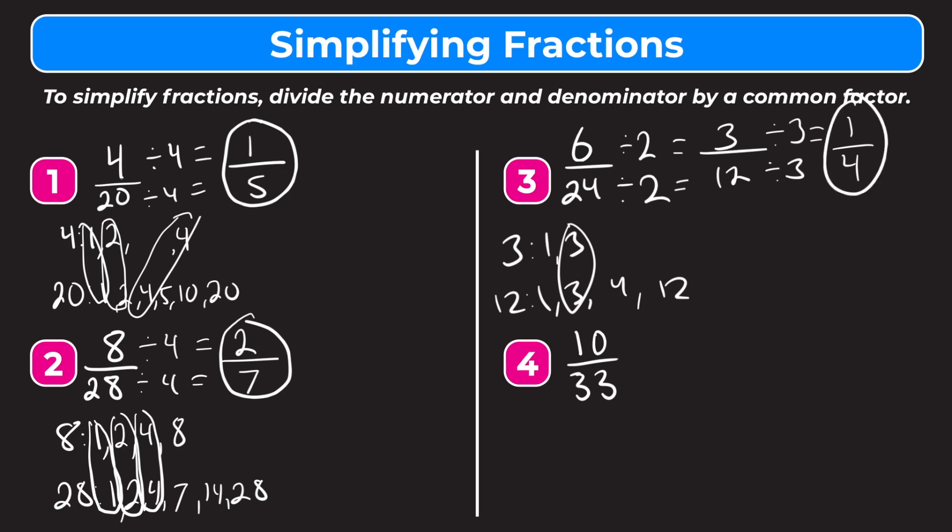We could have started by dividing by 3, then divided by 2; or we could have started by dividing by 6 and gotten straight to 1 fourth. All three paths lead to the same answer. As long as you keep checking that your numerator and denominator don't share any common factors other than 1, and you don't stop until they don't, you'll always reach the same answer. Notice that all three examples so far produced an equivalent fraction: 1 fifth equals 4 twentieths, 2 sevenths equals 8 twenty-eighths, and 1 fourth equals 6 twenty-fourths.